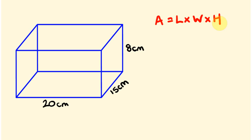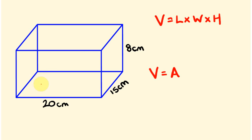That would be in centimeters cubed because there are three measurements being multiplied. Alternatively, you can think about it a different way — the volume equals the area of the base times the height. So if you know the area of this particular base here, which is 20 by 15, and you times that by the height, you get the same answer.